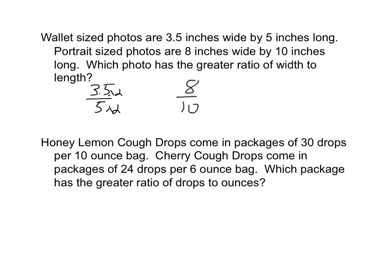So 3.5 times two would be seven. Five times two would be ten. Since eight out of ten is bigger than seven out of ten the eight by ten has a greater ratio of width to length.